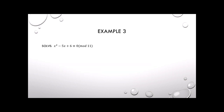This next example is a bit more complicated — we have an x term, and we're going to solve it by factoring. When I factor the polynomial, I need two things that multiply to positive 6 and add to negative 5, which are negative 2 and negative 3. So it factors to (x minus 2)(x minus 3) congruent to 0 mod 11.